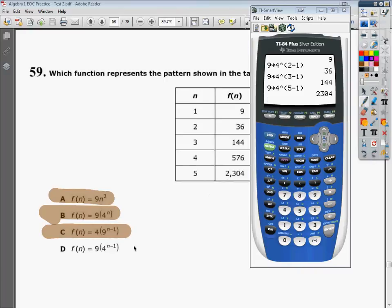So I can say with reasonable confidence that the answer to number 59 is D. So just take your information, plug in your n, see if you get the f of n you're looking for, and you should come out just fine.